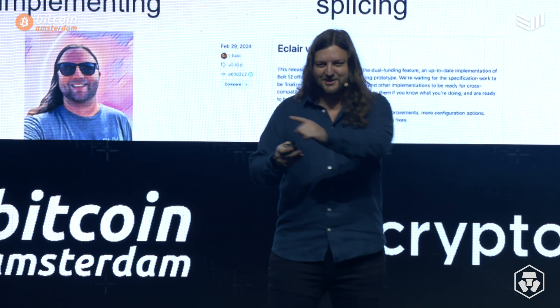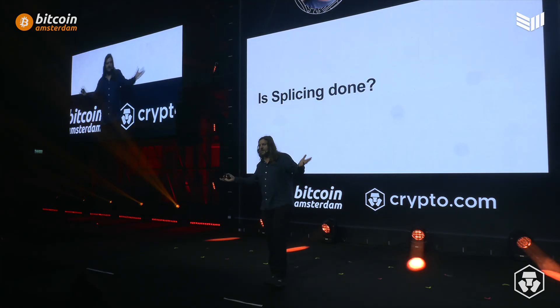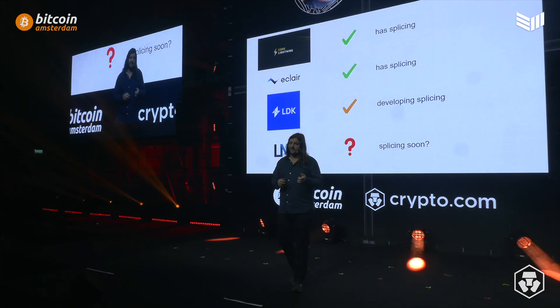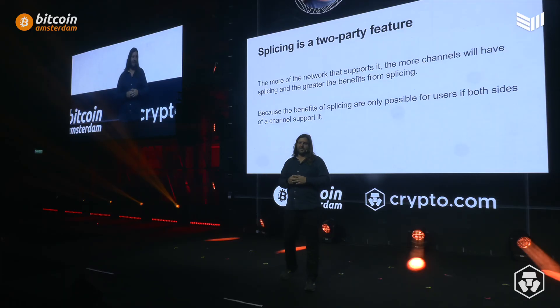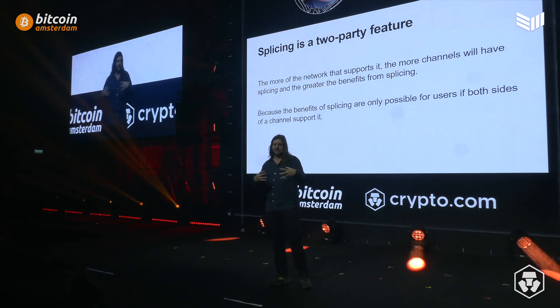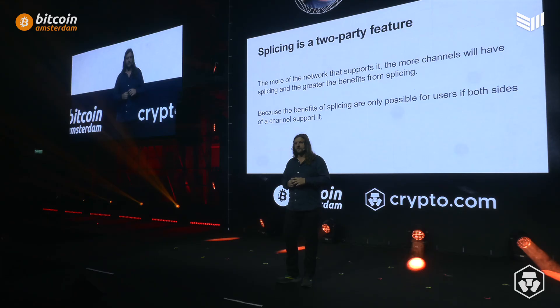It's coming. Hassle T-Bast and me, and maybe LDK. This raises the question: is splicing done? Right now, Eclair has it, Core Lightning has it, LDK is working very hard on it and sounds very close. At LND, we haven't heard anything from them about working on it — one day I'm sure they'll come around. An important thing about splicing is that it's a two-party feature, so all the benefits require more nodes on the network to support it before it's fully usable. As we get more people implementing splicing and more nodes having it enabled, we start seeing a lot of those benefits.